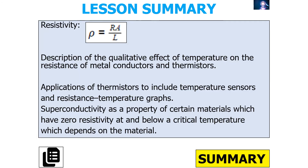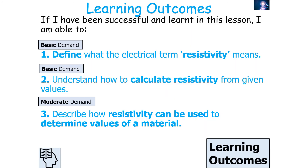To summarise today's lesson: resistivity is given by ρ = RA/L. You should be able to describe qualitatively the effect of temperature on the resistance of metal conductors and semiconductors, and understand applications with graphs. You should understand that superconductivity is a property of certain materials which have zero resistivity at and below a critical temperature which depends on the material. If we've been successful, we should be able to define electrical resistivity, calculate resistivity from given values, and describe how resistivity can be used to determine values of a material. Thank you very much and have a lovely day.